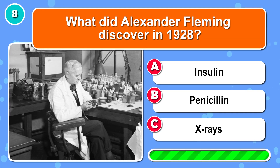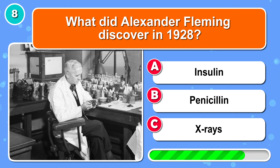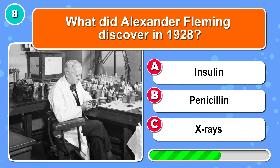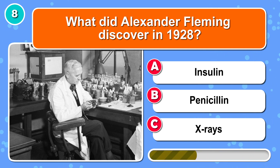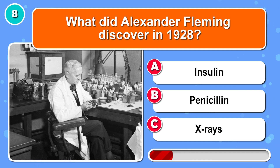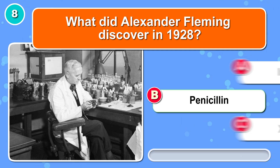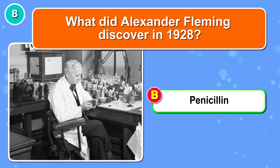What did Alexander Fleming discover in 1928? He discovered B: penicillin.